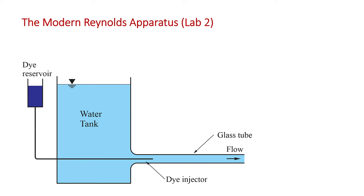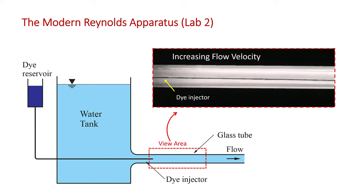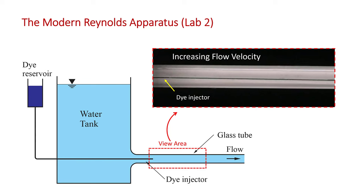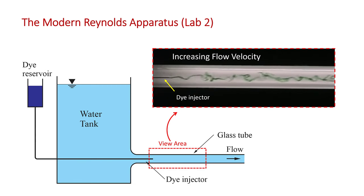Here's the modern apparatus that you'll use in lab two. Again, there's a tank of water and a dye injection system at the tube entrance, and the water flows through a glass tube so you can see the flow. Here's the viewing area. I'm going to show you a short video of what happens to the dye stream as the flow velocity increases. The water velocity starts out low and slowly increases. At first, the dye is carried directly downstream in a straight line by the laminar flow, but as the average velocity increases, you can see some waviness start to form, and the amplitude of the waviness increases.